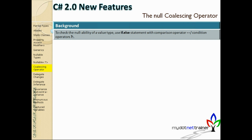The continuation of the 2.0 new features is the null coalescing operator. The null coalescing operator is a little interesting operator. To understand it, we need some background on other operators. This is again a new operator that can reduce the amount of code you write. The 2.0 features are added to help simplify a couple of operations.